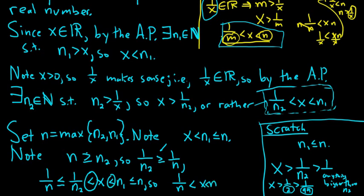And that completes the proof. So we have 1 over n less than x, which is less than n. Let me write it again so it's a little more clear. 1 over n less than x less than n. And that finishes the proof.